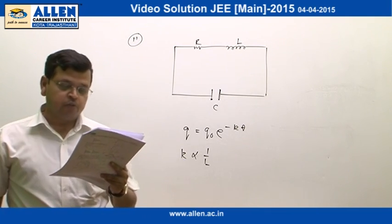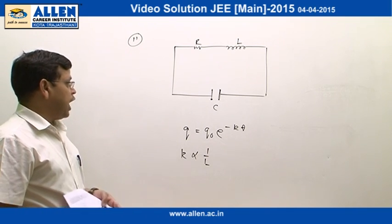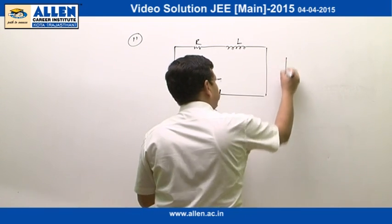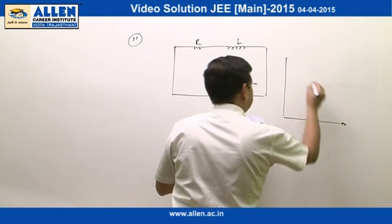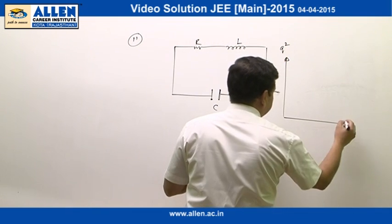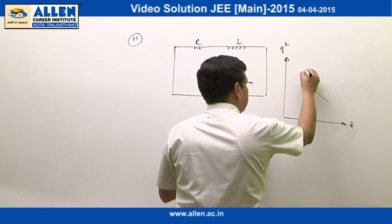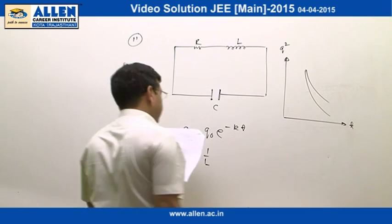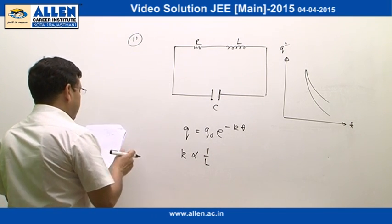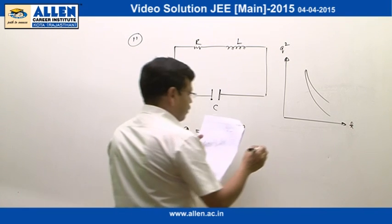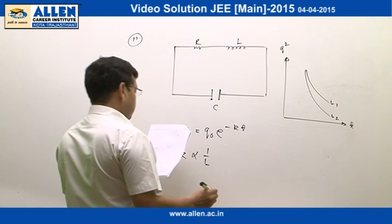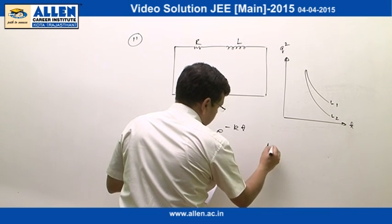A circuit having a smaller value of L will have a steeper graph for q. Looking at the options, it is easy to find that the graph between q² and t appears as shown. Since it is given that L₂ is less than L₁, this steeper graph corresponds to L₂ and the other to L₁. So the correct option is answered.